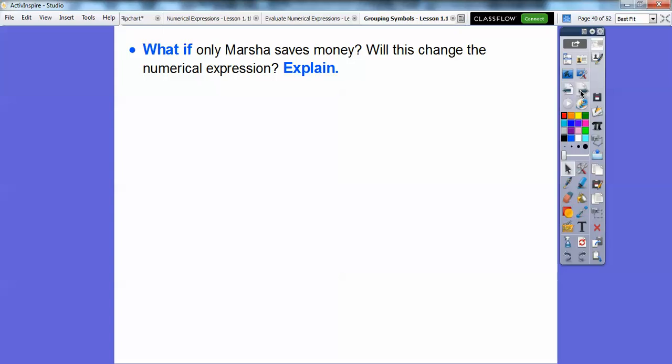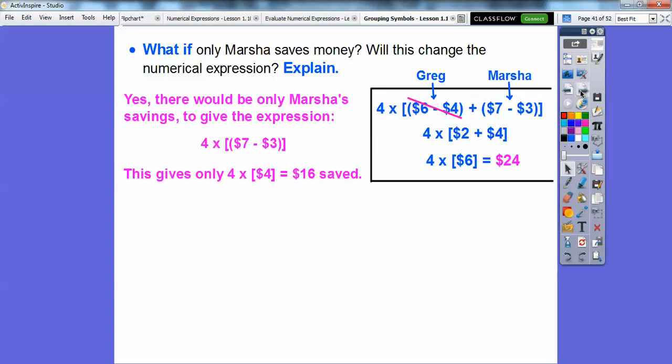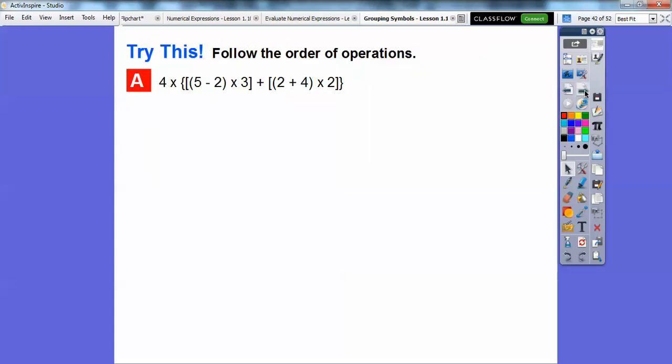What if Marsha only saves, if only Marsha saves money, will this change the numerical expression? Well, yeah. It'll take out this whole Greg equation right here. So we'd only have Marsha's money right here. Greg would be gone. So it would be 4 times the quantity 7 minus 3. And 7 minus 3 is 4. So 4 times 4, she would save $16 instead of the 24.